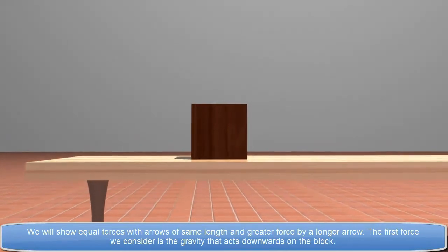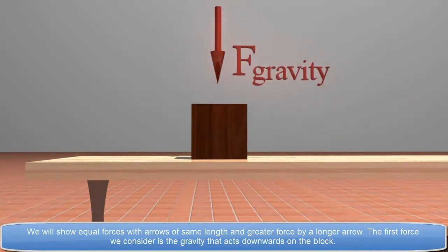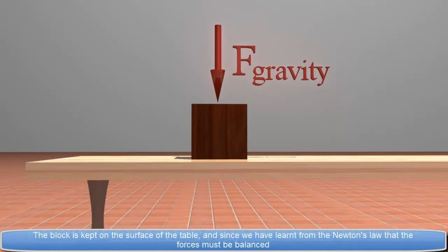The first force we consider is the gravity that acts downwards on the block. The block is kept on the surface of the table.